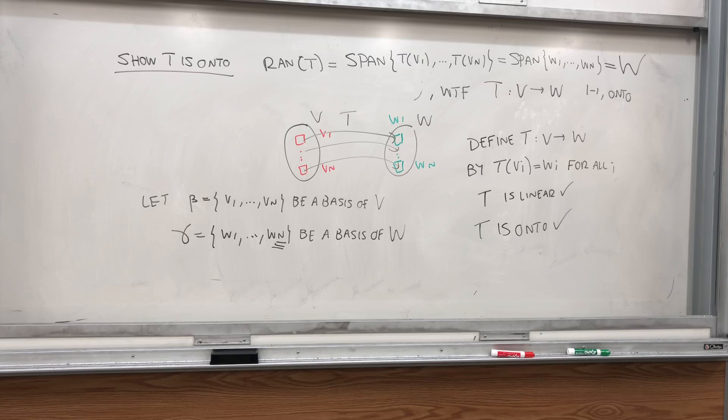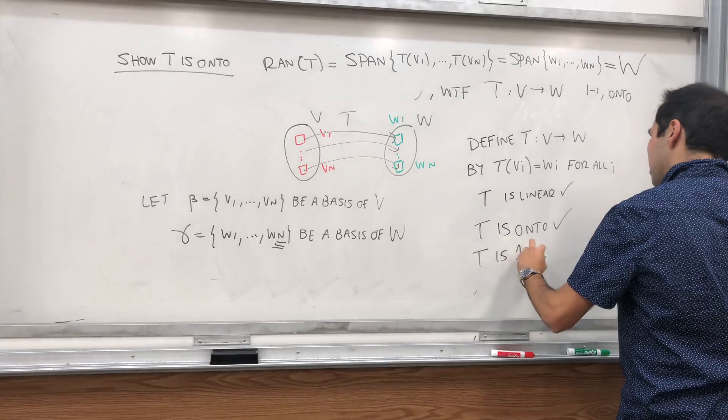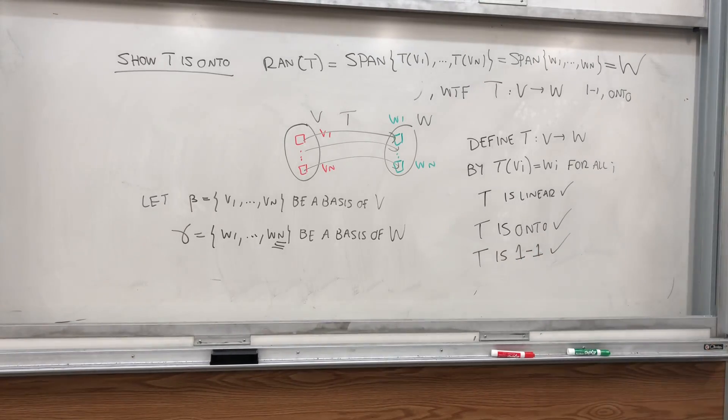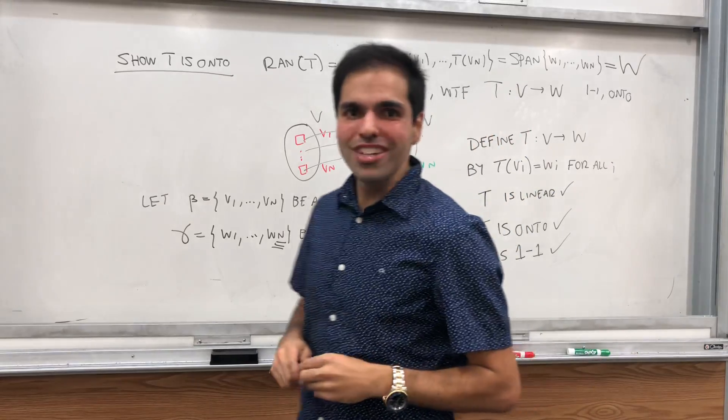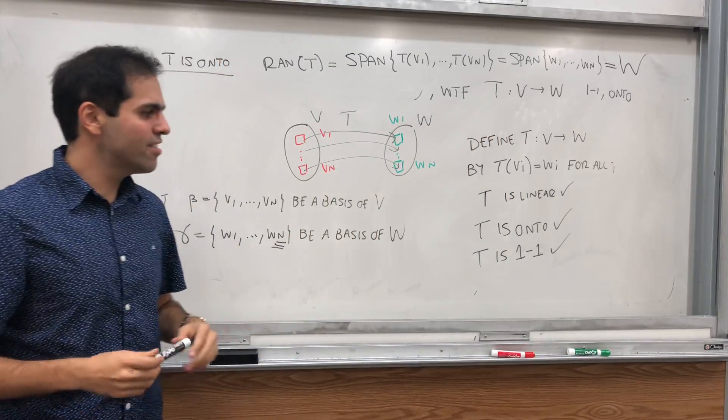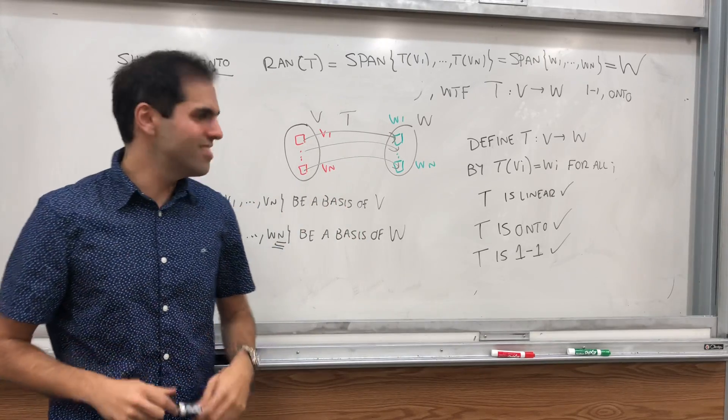And lastly, well, because, again, by the Rank-Nullity theorem and those two vector spaces have the same dimension, it follows that T is also one to one. And we are done. So, I have shown now, officially, that if two vector spaces have the same dimension, then they're isomorphic and vice versa.